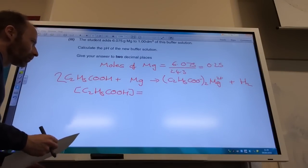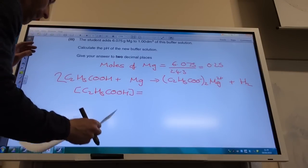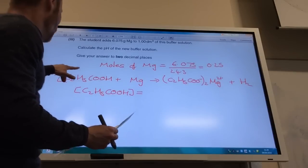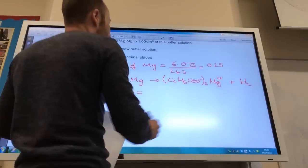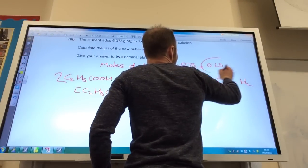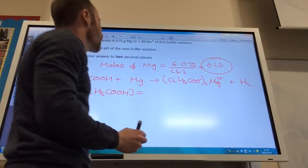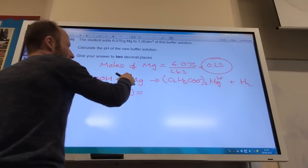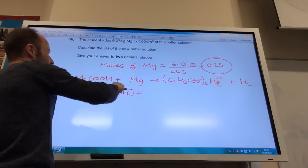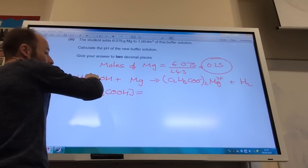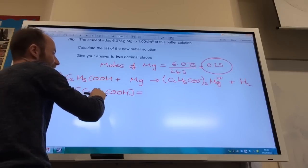However, I've added 0.25 moles of magnesium. For every 0.25 moles of magnesium, I've lost 0.5 moles of propanoic acid because it's a 1 to 2 reaction.